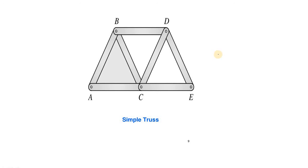In the last video, I discussed how to use the method of sections for solving simple trusses. So, what is a simple truss? The basic forming structure is a triangle, and in simple trusses, the truss consists of more than one triangle.